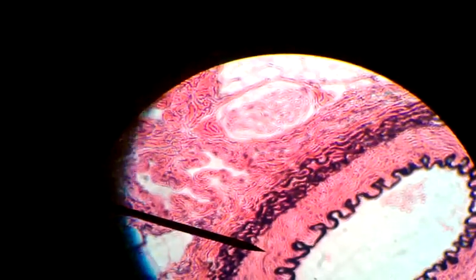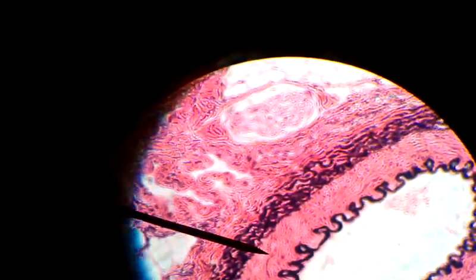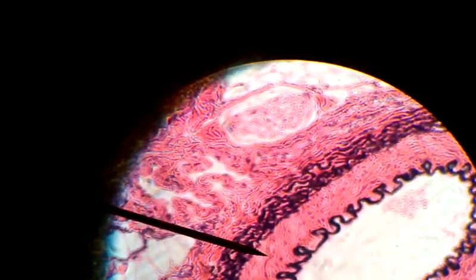So the lumen is the white circle. The dark squiggly line is the interna. The middle part, the pink, is the media. And the thick band on top is the externa. So just count out: lumen, interna, media, externa.